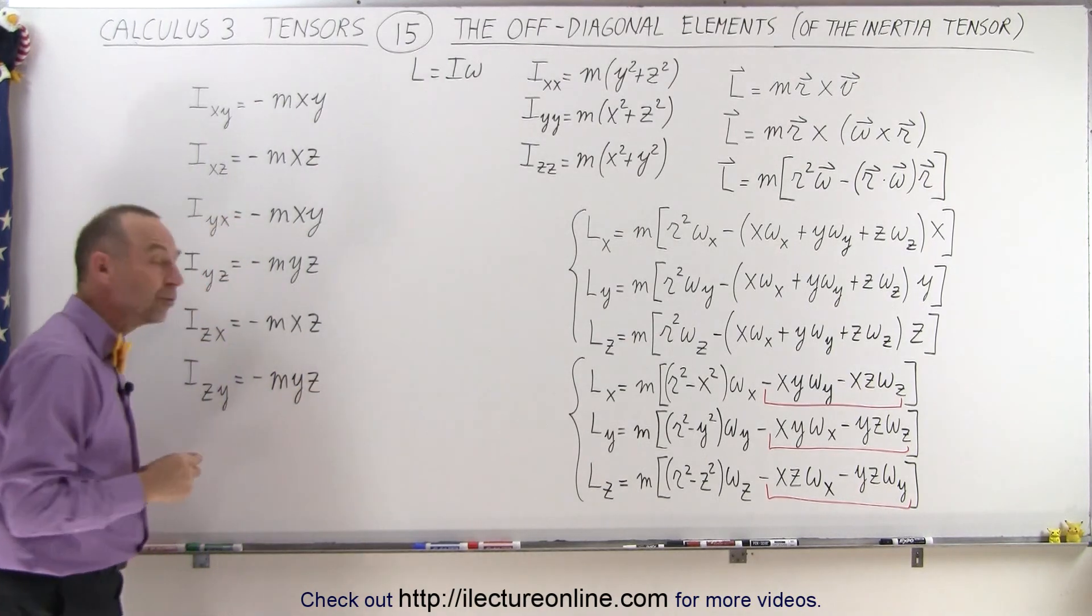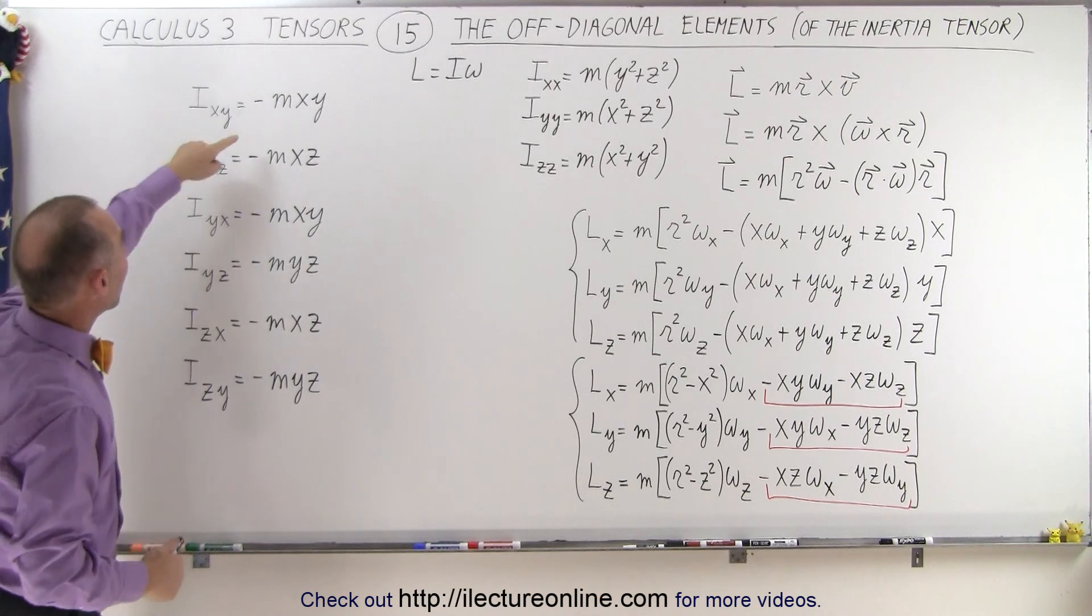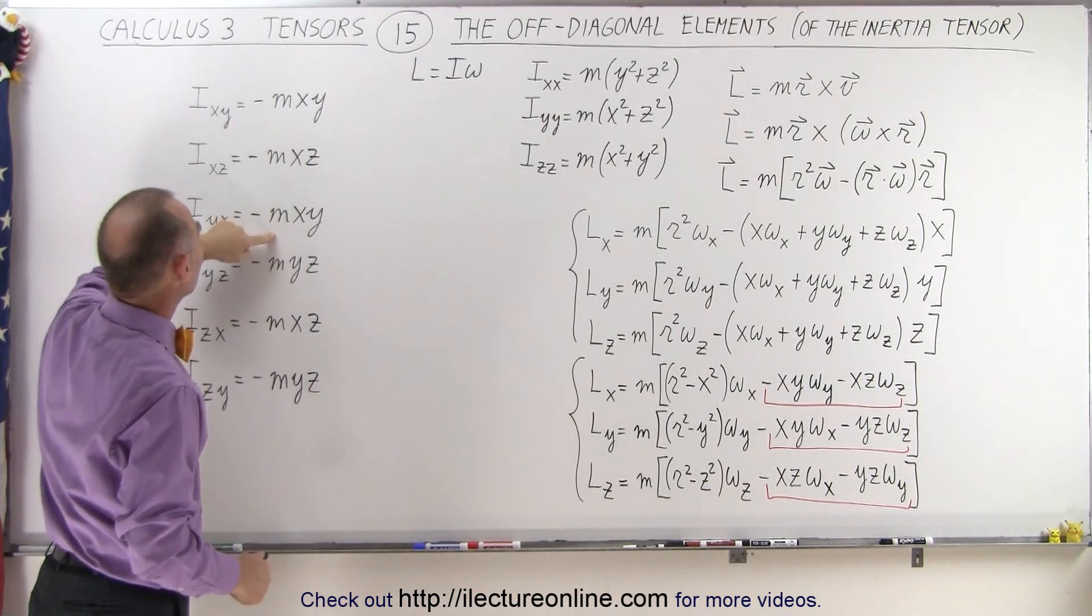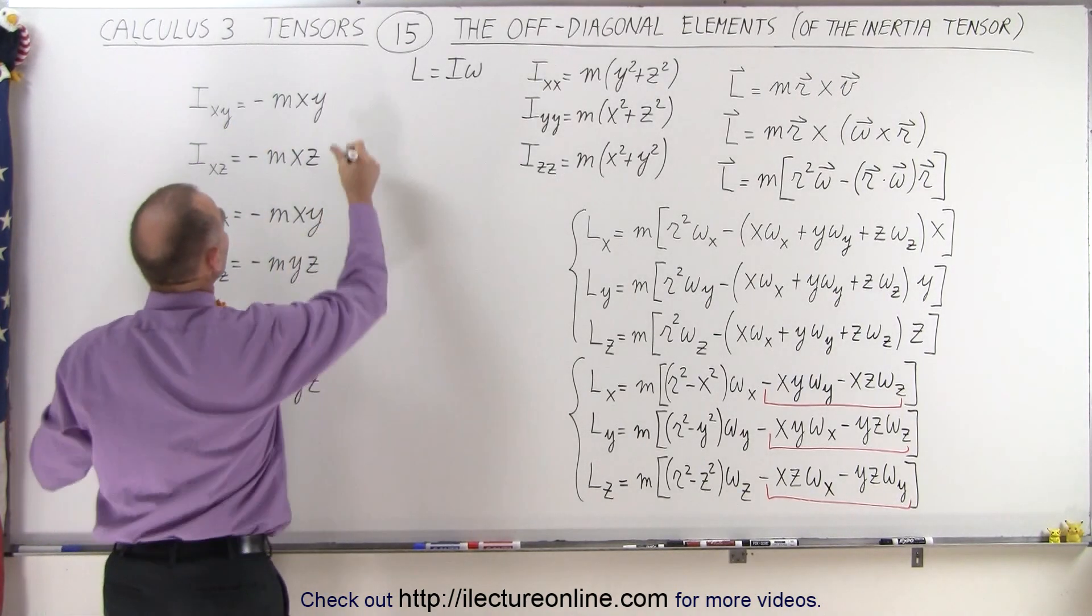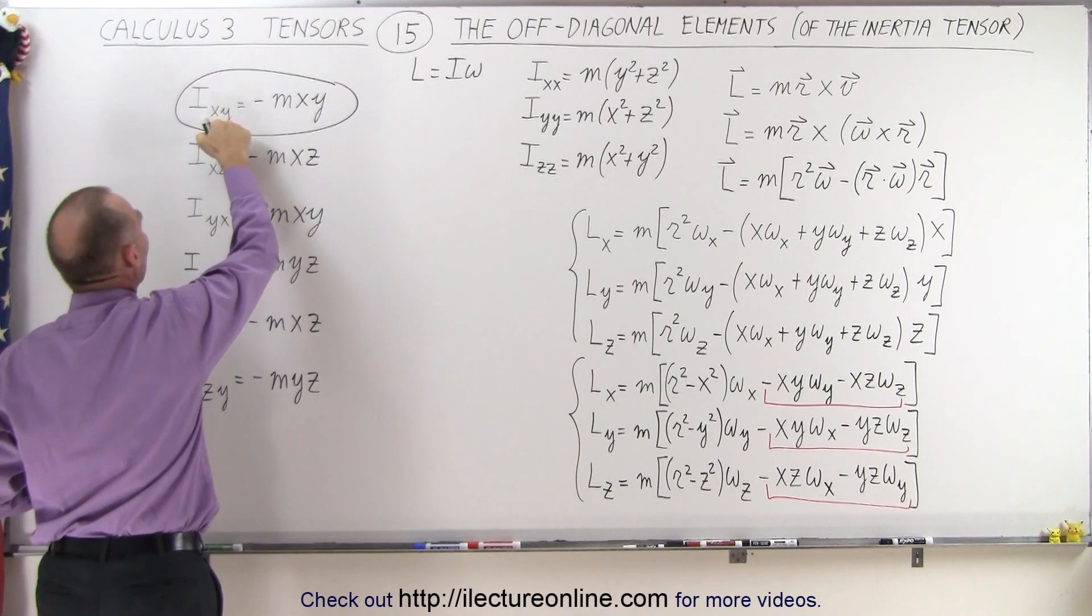And now if you take a look at these, we realize that there's actually three pairs. Because we have a minus mxy and a minus mxy. So these two are the same. So let's go ahead and circle those.